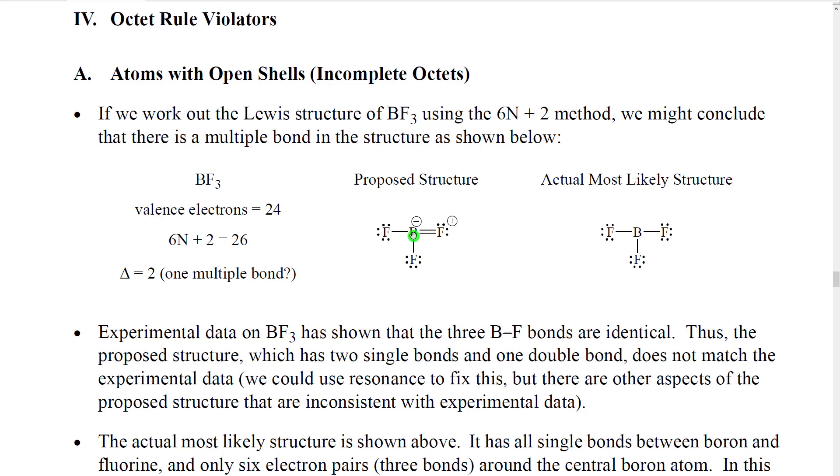So then we put boron, which is the less electronegative, in the center. We put the fluorines all around it. We draw in a multiple bond and fill in remaining electrons. And we get a structure that looks like this. The boron is going to have to have a negative formal charge because it wants 3 and currently owns 4. This fluorine is going to have to have a positive formal charge because it wants 7 and currently only owns 6. This might be our proposed structure.